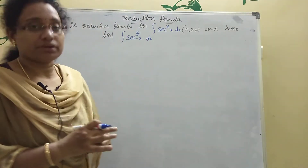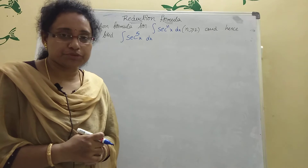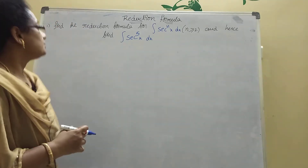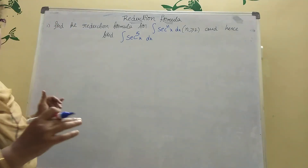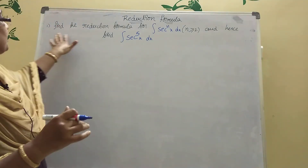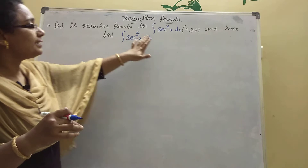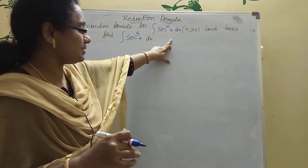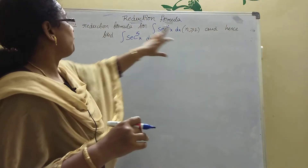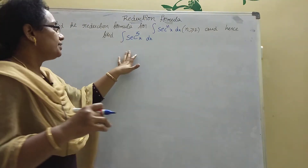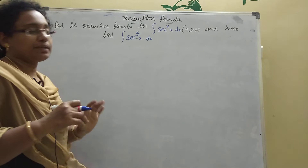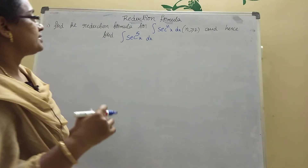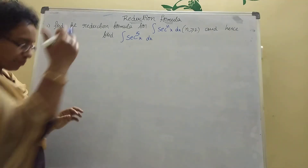It is a very important 7-marks problem. Today I am explaining the reduction formula: integration of secant power n times x dx. Then you should find the integration of secant power 5 x dx. See, it uses the same formula only.